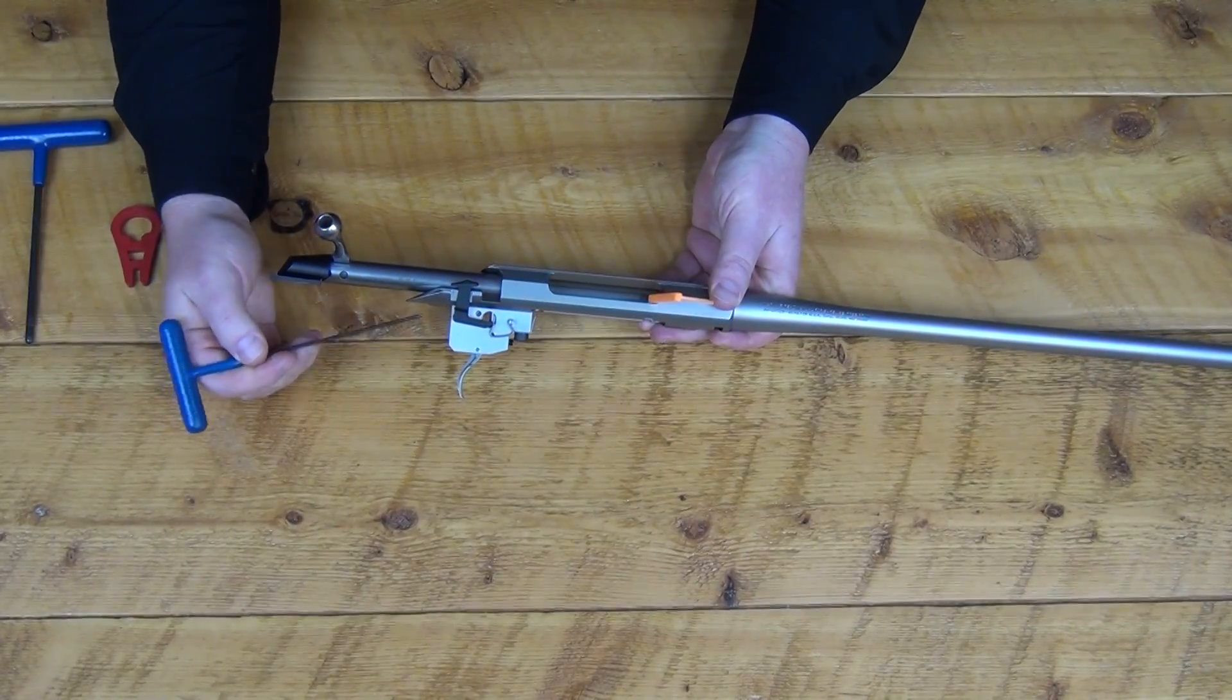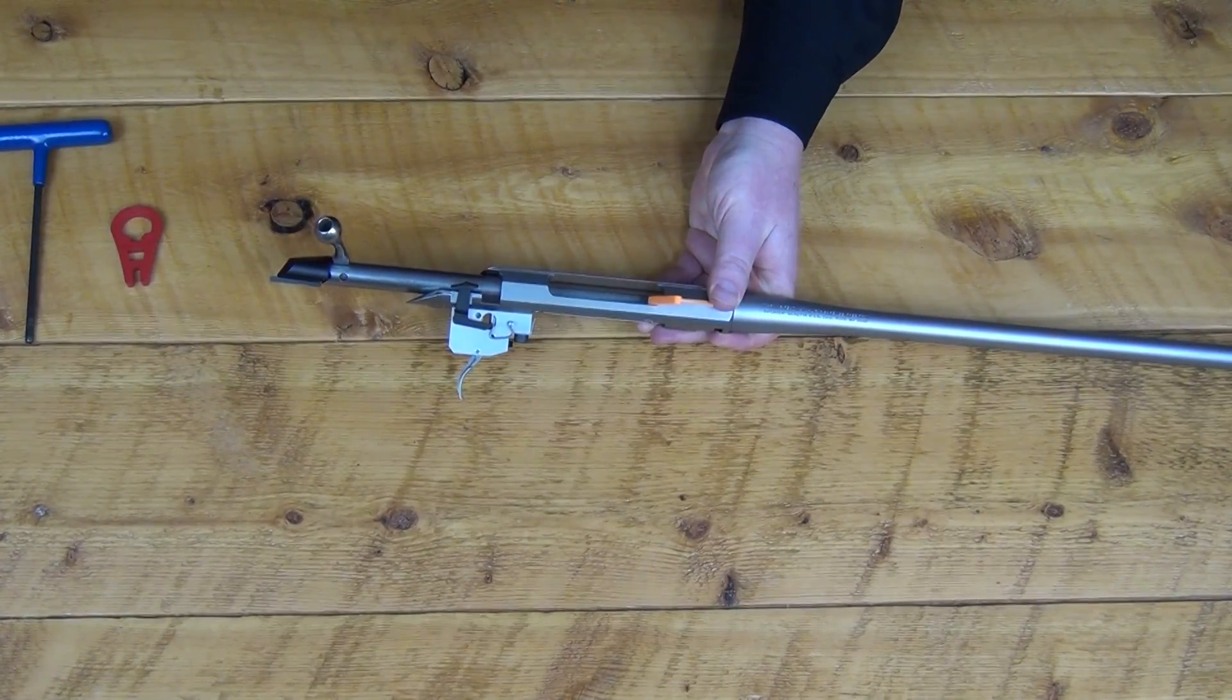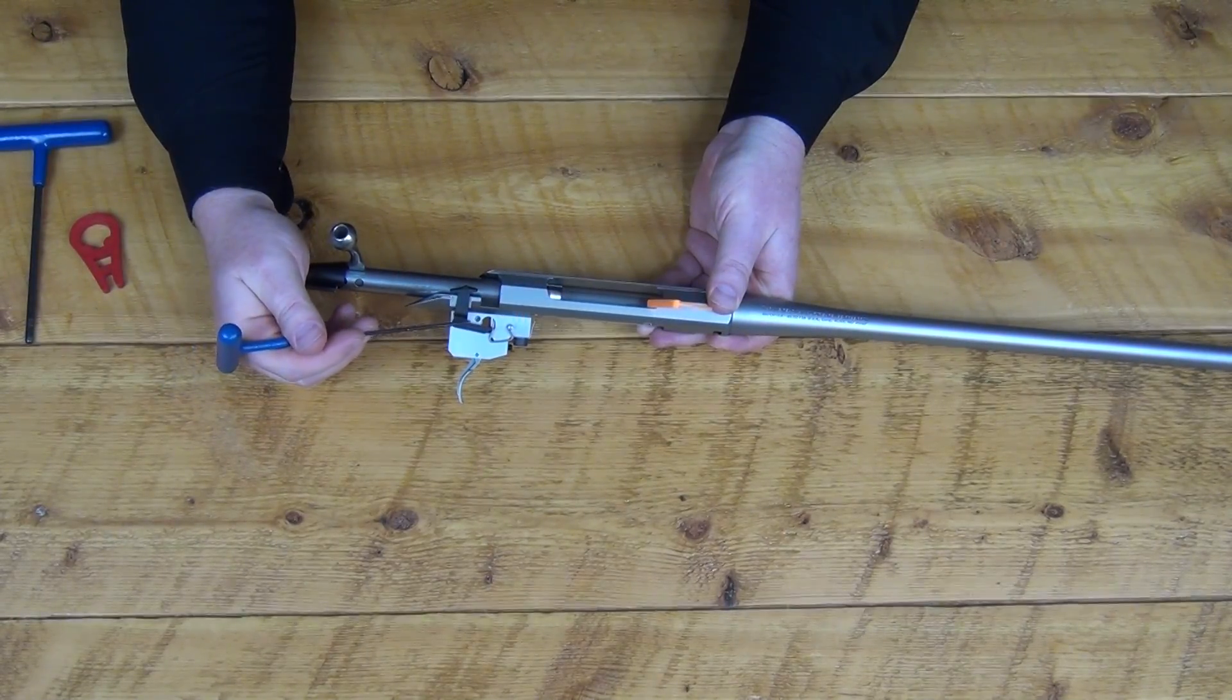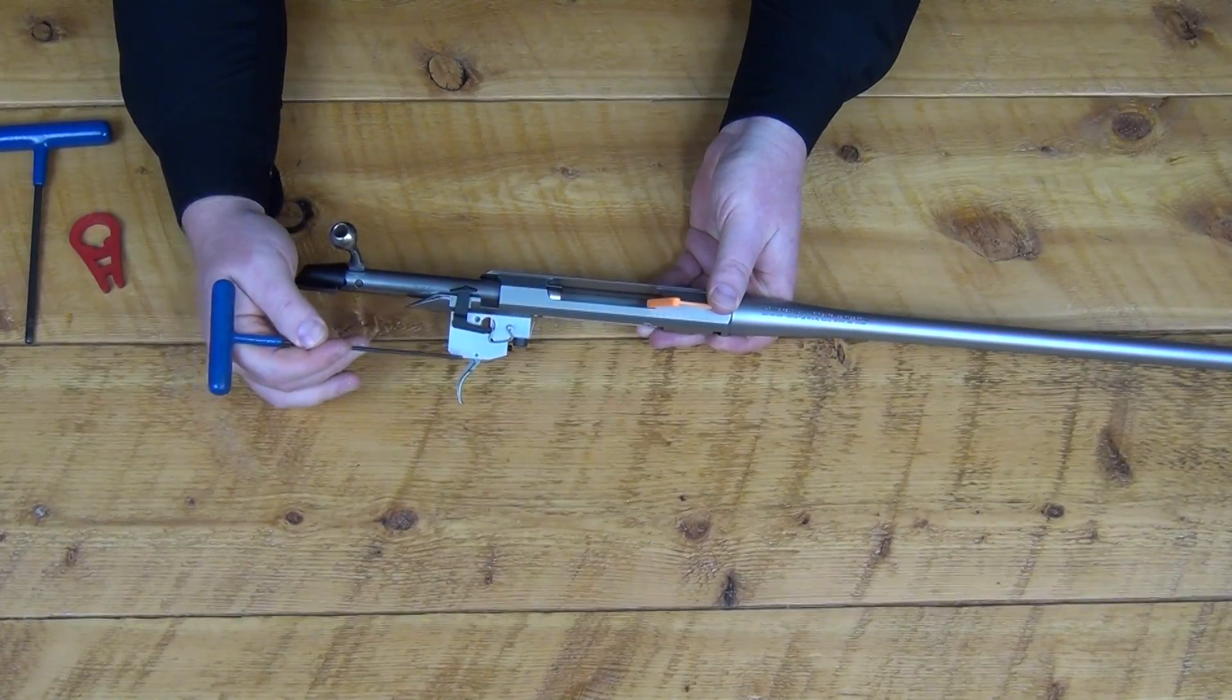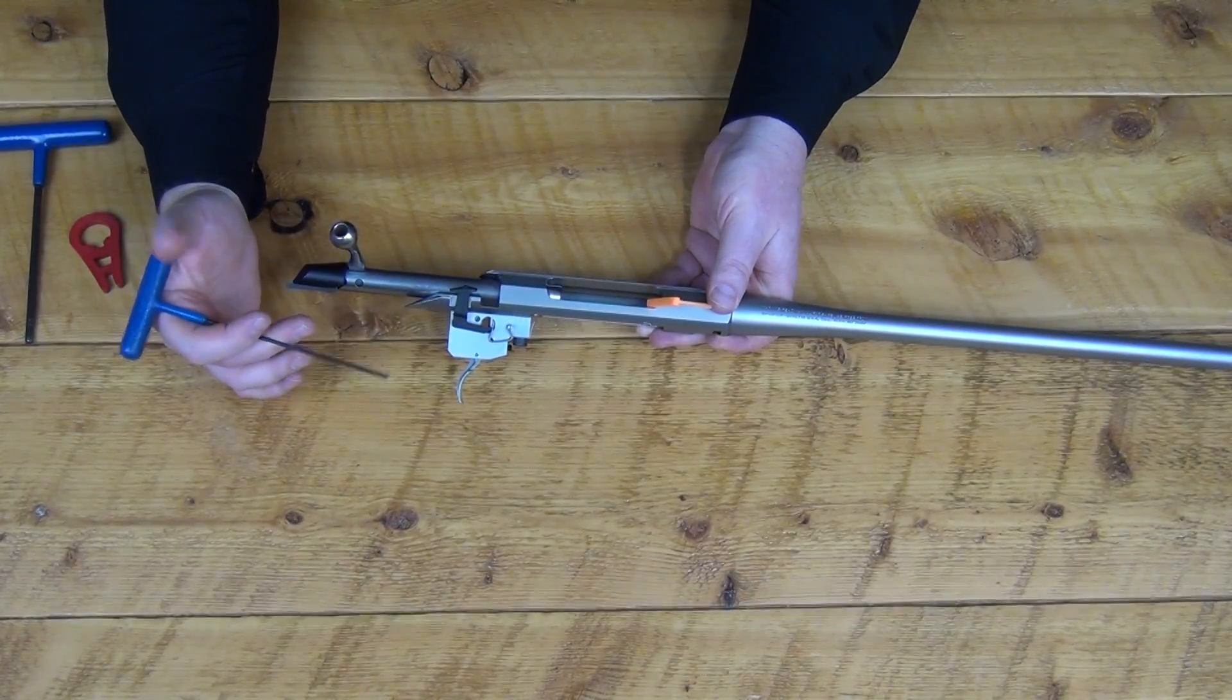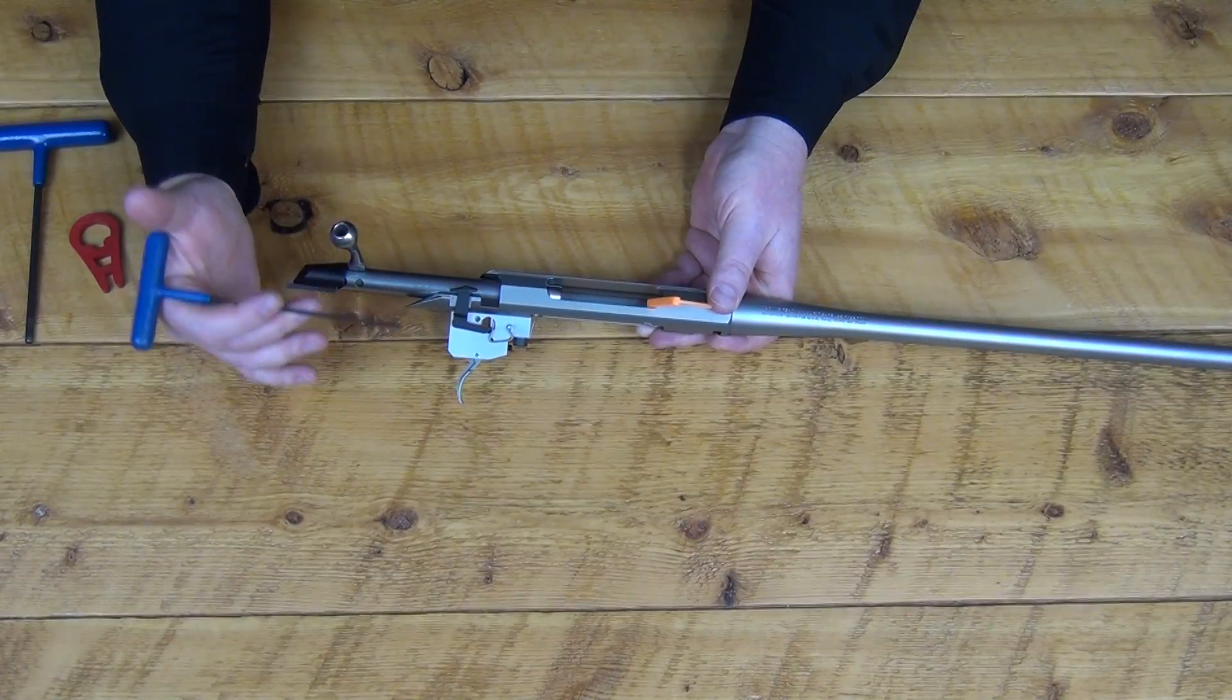One of the nice things about Tikka and Sako triggers, and this goes all the way back to the 1960s Sako BR action over my shoulder here, the trigger mechanism is still pretty much the same on this modern Tikka T3X. It is enclosed in an aluminum housing which is great for keeping dust, grime, and all the muck out of your trigger mechanism. So it is 100% reliable in the field.